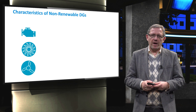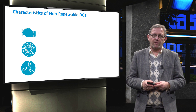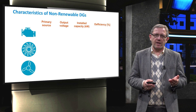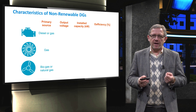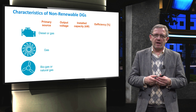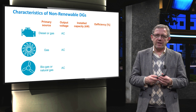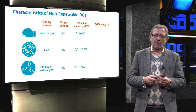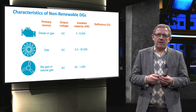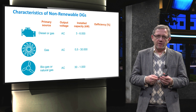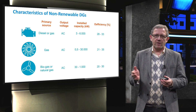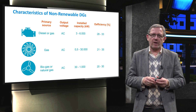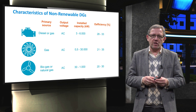In this slide, we compare the three previously introduced technologies in terms of primary source, output voltage, installed capacity, and electrical efficiency. Diesel and gas are the primary sources of reciprocating and gas engines. All three generators operate with an AC output voltage and could reach an installed capacity of 30 megawatt. Their electrical efficiency, which depends on the operating point, is approximately between 20 and 35 percent. Note that if gas turbines are used for combined heat and power applications, they may reach up to 80 percent efficiency.